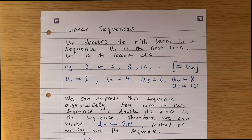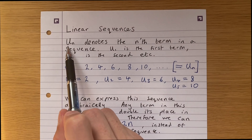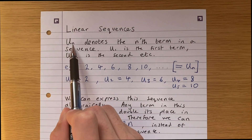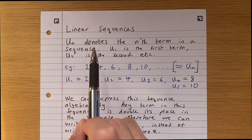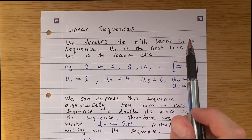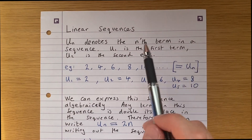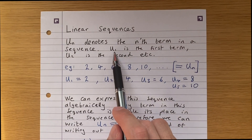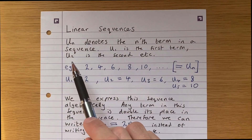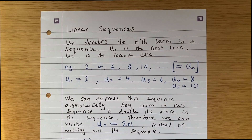In this video, we're going to talk about linear sequences. We say that u_n — so we put a u and a little n — denotes the nth term in a sequence. So for example, u1 is the first term, u2 is the second term, and so on.